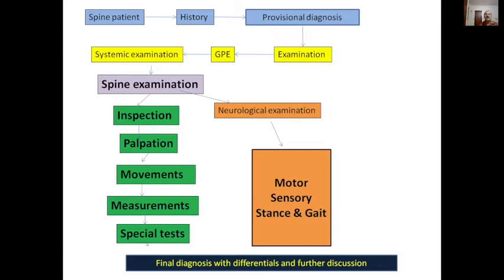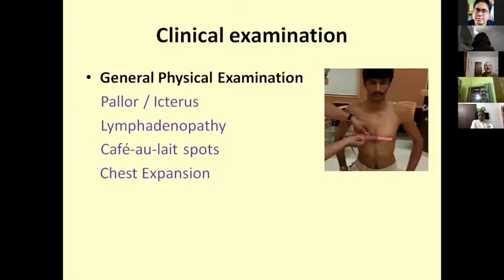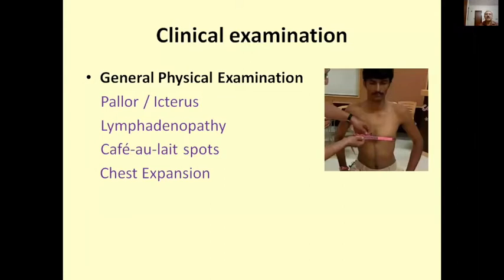We start with the general physical examination — not just for formality, but because it can reveal important findings. For example, in a metastatic spine, there may be blood loss from GI malignancy with a history of melena. We should also try to find the cause of the primary — for instance, a patient on anti-tubercular therapy could develop lymphadenopathy.